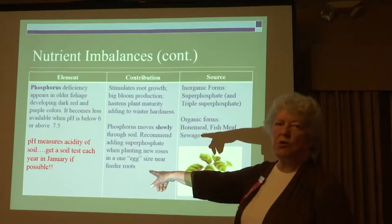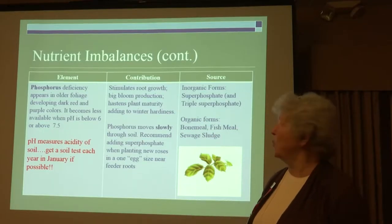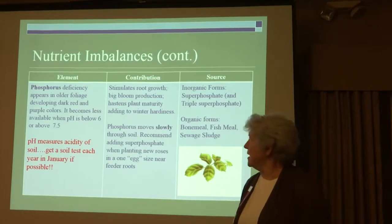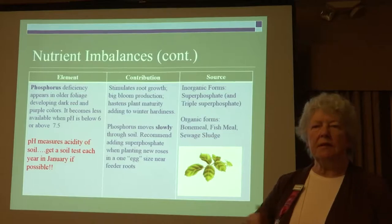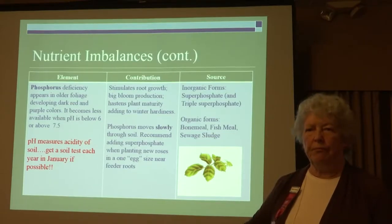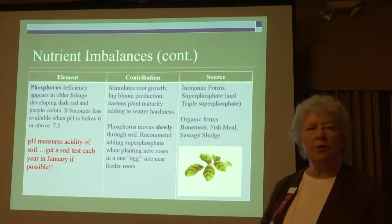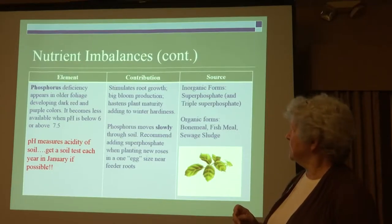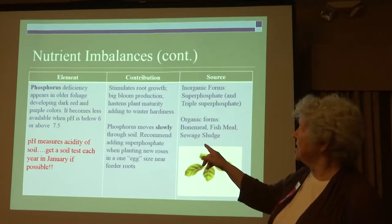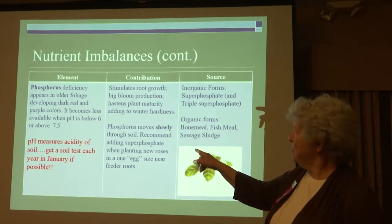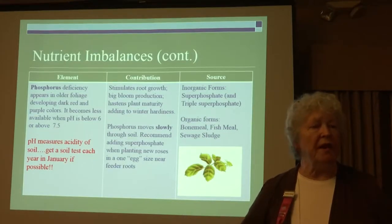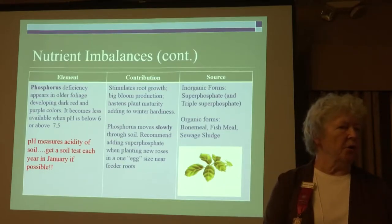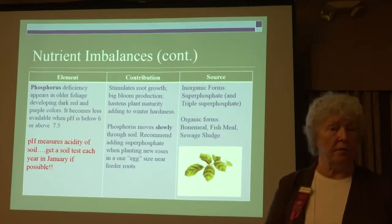Phosphorus deficiency: you'll see it in your garden and not know what it is. The banding on the leaves is a dark reddish purple — it's really strange. If your leaf starts turning kind of purple, phosphorus is a major suspect. Get a soil test, because if the pH goes below 6, it will lock up that phosphorus so your plants can't pull it out of the soil.